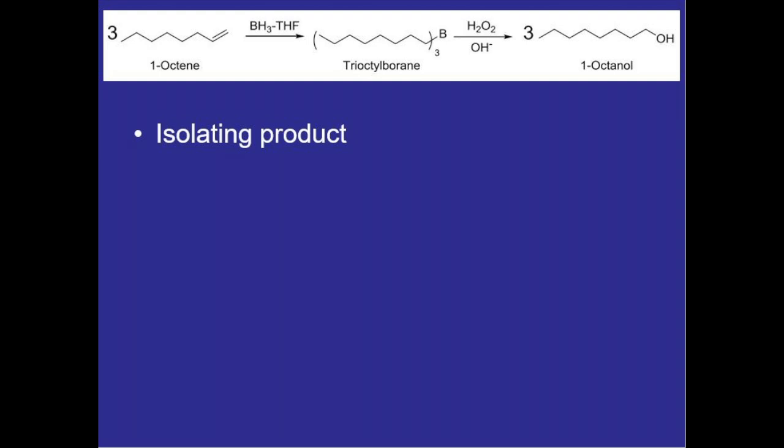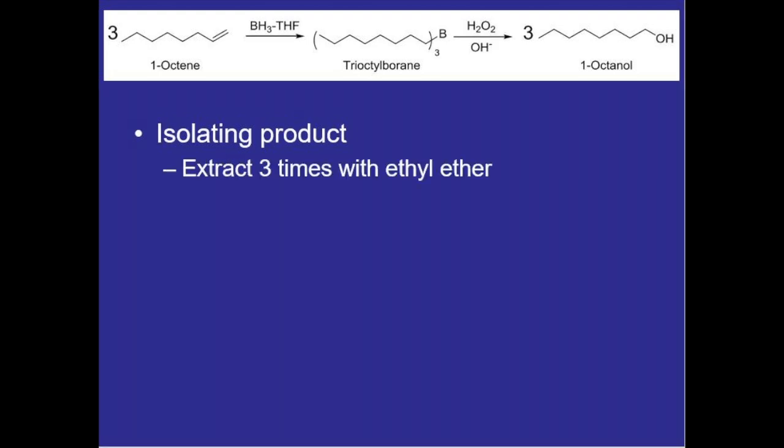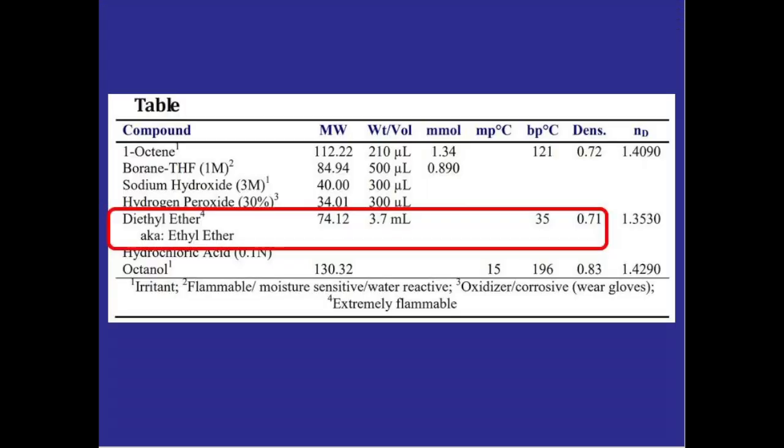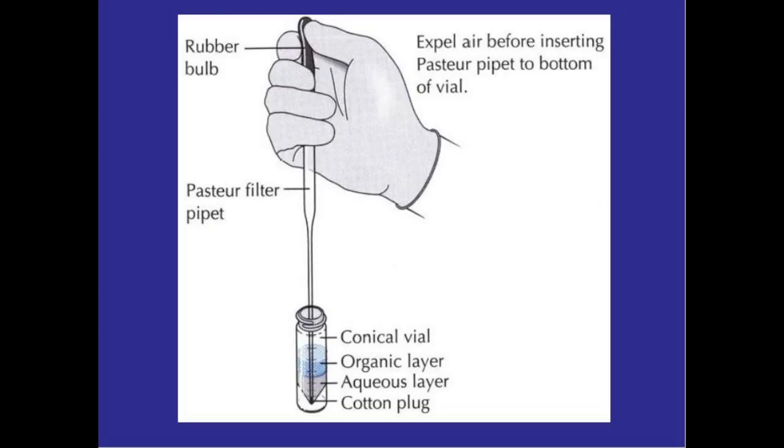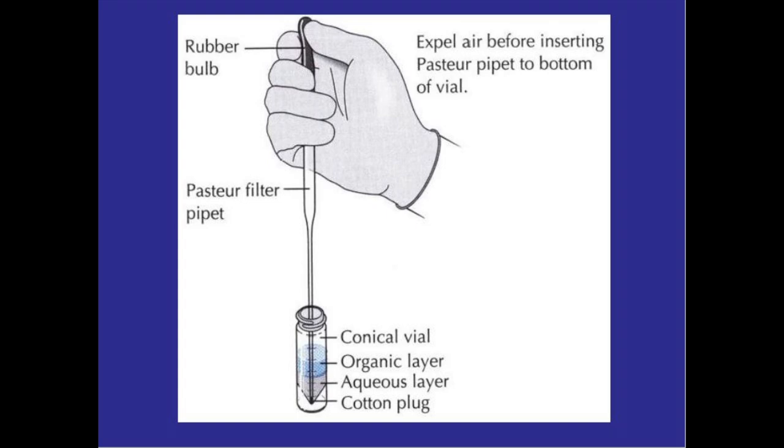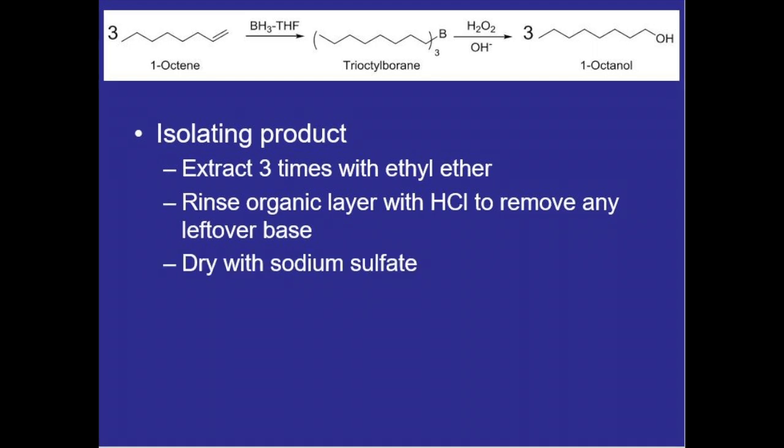Once the entire reaction is completed we will extract our product using ethyl ether or diethyl ether which is less dense than water so when we do our extractions the organic ether layer containing our product will be on top of the aqueous layer. We'll rinse those extracts with some HCl just to remove any leftover base from the oxidation step. Then we'll dry that organic layer with sodium sulfate to remove any water and evaporate the ether solvent hopefully leaving our octanol with possibly just some unreacted one octene from the initial reaction.